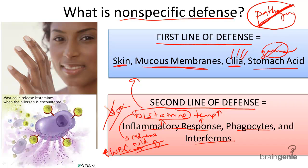Phagocytes are another type of nonspecific defense — another type of white blood cell or leukocyte. They are kind of like giant Pac-Men. They engulf invaders and use digestive enzymes to break them down.